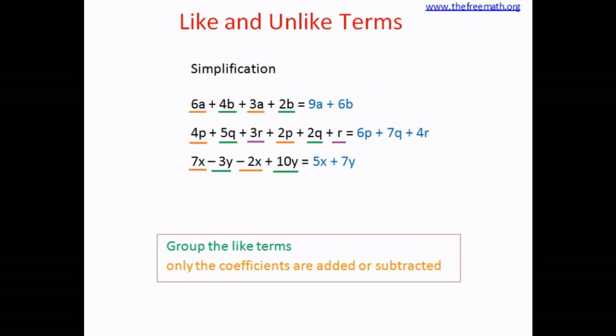In the next example, both the terms are like terms. And the coefficient in both the terms is not written. That means the coefficient is 1. So a square plus a square means 1a square plus 1a square. When I add the coefficients, I get 2a square. This is how you simplify an algebraic expression by clubbing together the like terms.